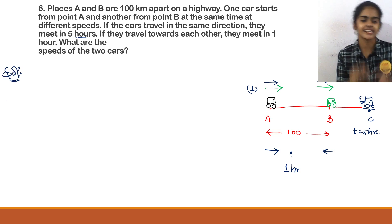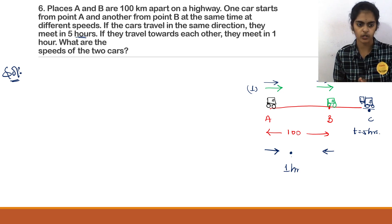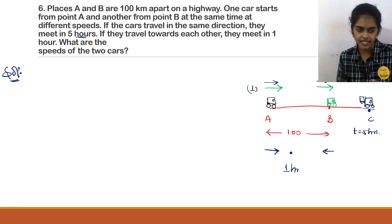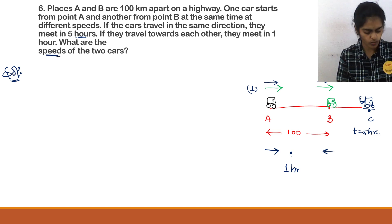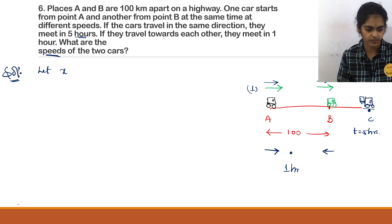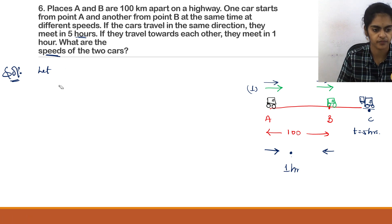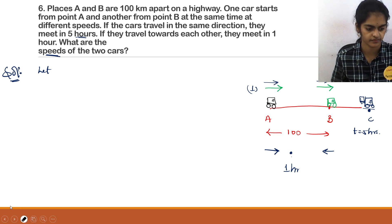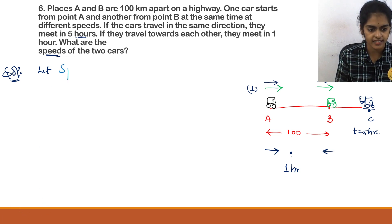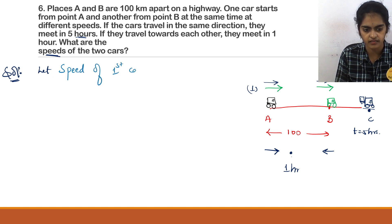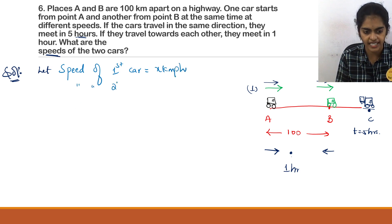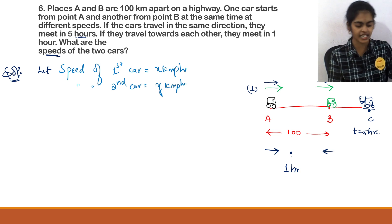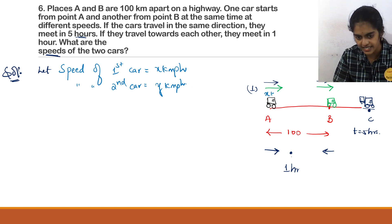We need to represent these statements mathematically and solve for the speed of the two cars. Let the speed of the first car be x km/h and the speed of the second car be y km/h.